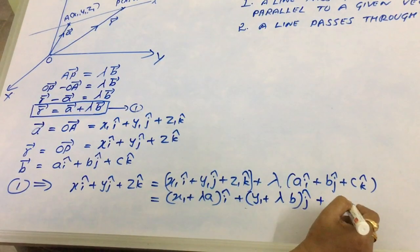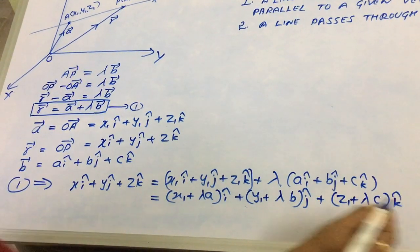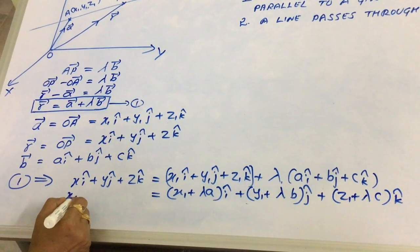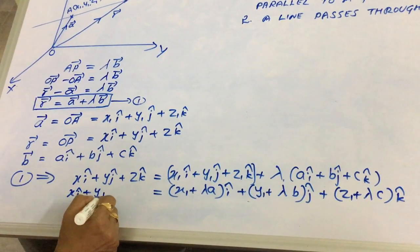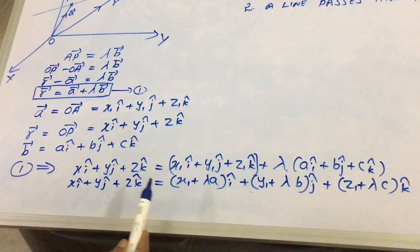Also, z1 plus lambda times C k-cap. The left hand side will be x i-cap plus y j-cap plus z k-cap.